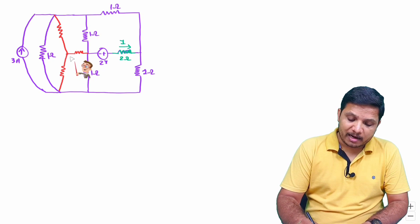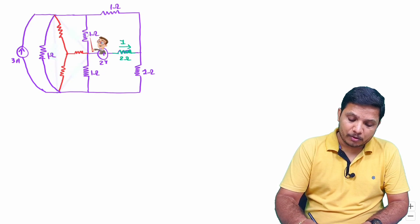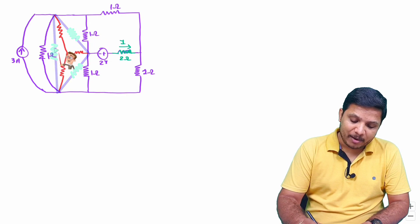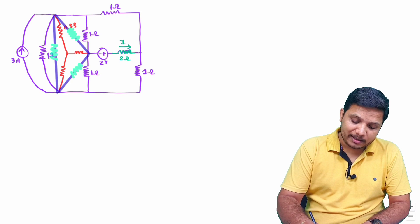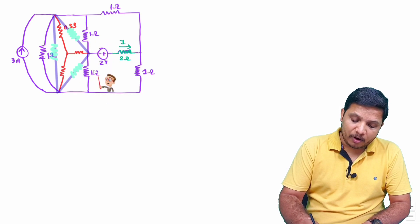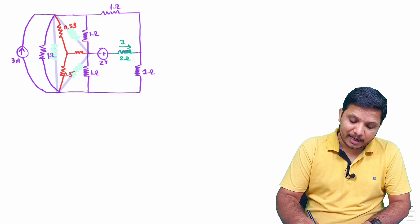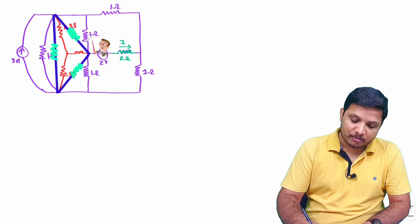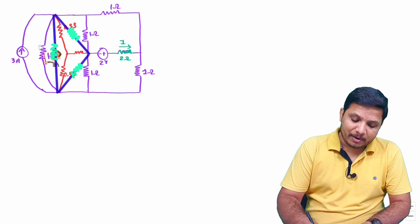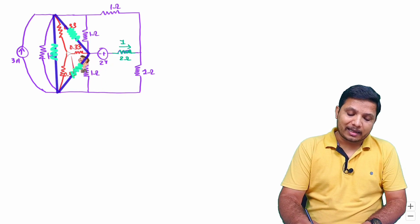Now in star form, each equivalent resistance is found by multiplying two resistors and dividing by the algebraic sum of all three. So each is 1 times 1 divided by 1 plus 1 plus 1, which equals 0.33 ohm. All three star resistances come out to 0.33 ohm each, converting the delta connection into the star connection.